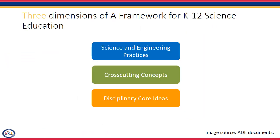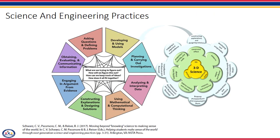The standards are organized around three dimensions: the science and engineering practices, the cross-cutting concepts, and the disciplinary core ideas. The first dimension outlined in the framework is the science and engineering practices. These describe behaviors that scientists engage in as they investigate and build models and theories about the natural world, and the key set of engineering practices that engineers use as they design and build models and systems.